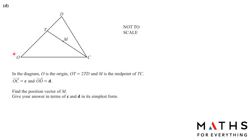We are given a diagram where O is the origin. OT = 2/3 of OD, meaning if TD is 1 then OT is 2. M is the midpoint of CT. OC is vector c, and OD is vector d. So OT = (2/3)d and TD = (1/3)d. We need to find the position vector of M, which means finding vector OM.